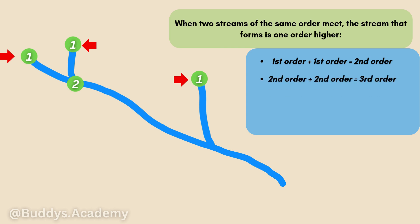If we take a second order stream plus another second order stream, that's going to form a third order stream. And as streams of the same order meet, the order is going to increase. For example, if a third order stream meets another third order stream, the stream that forms will be a fourth order stream, as demonstrated in the next diagram.